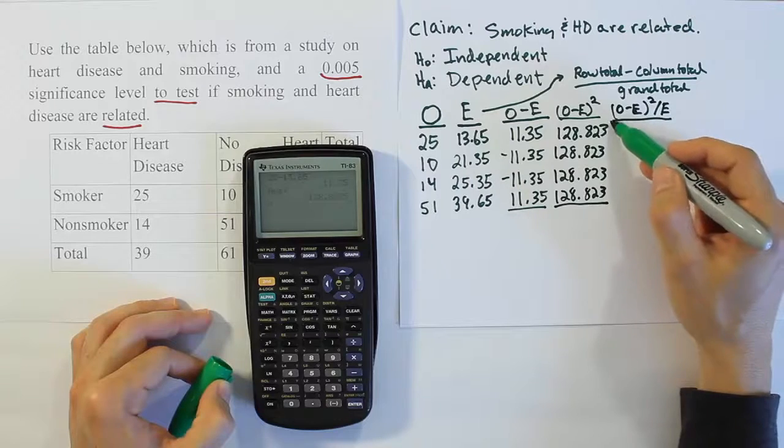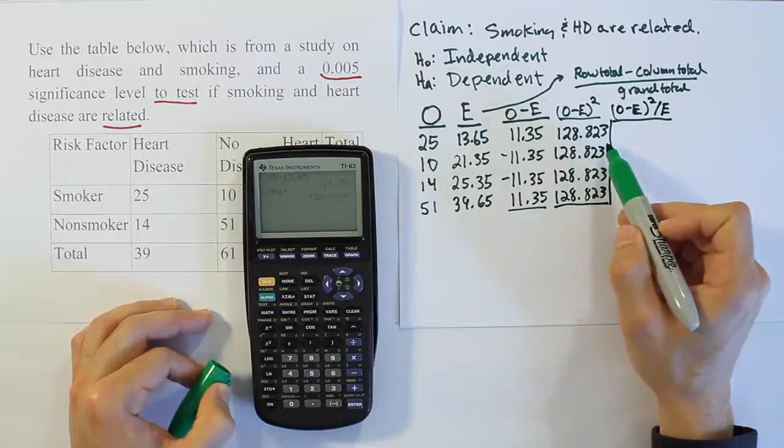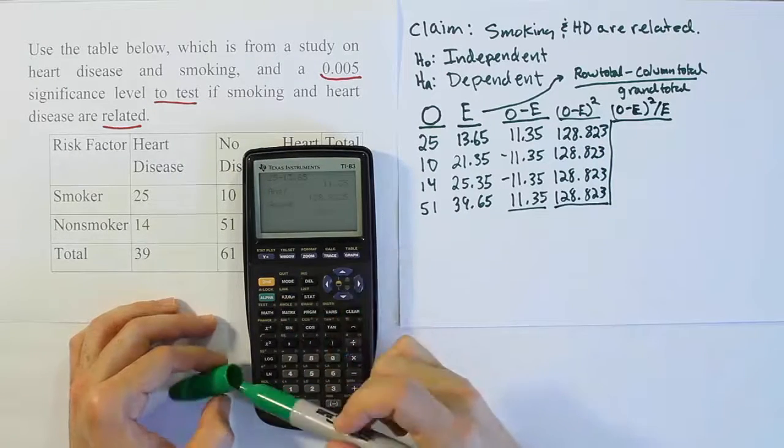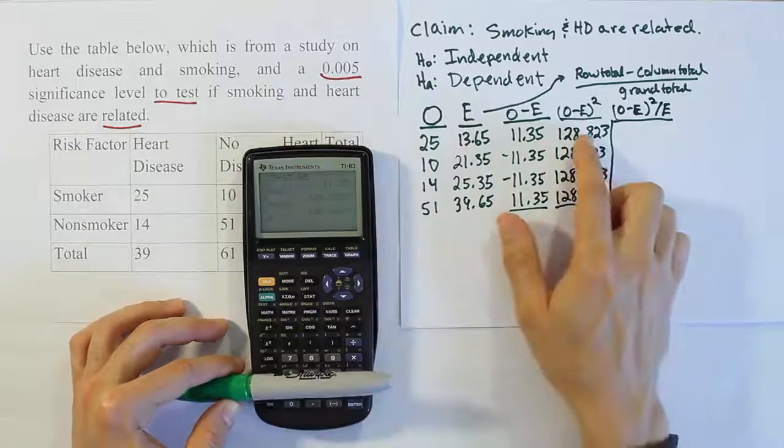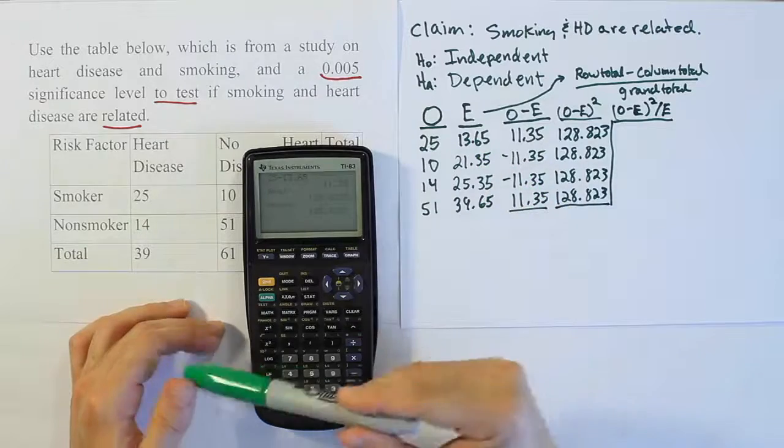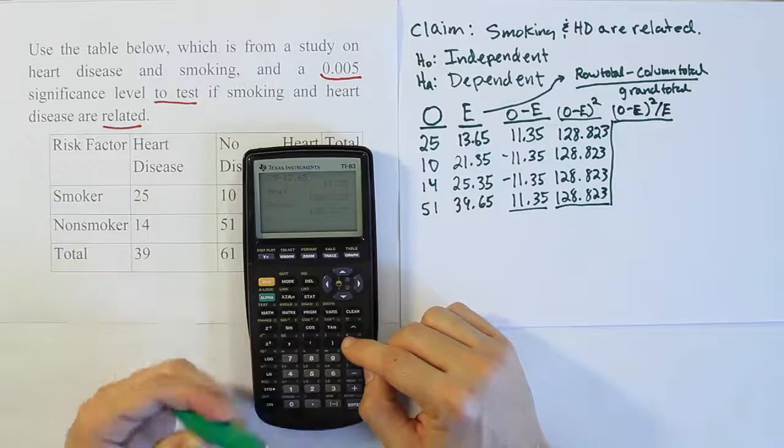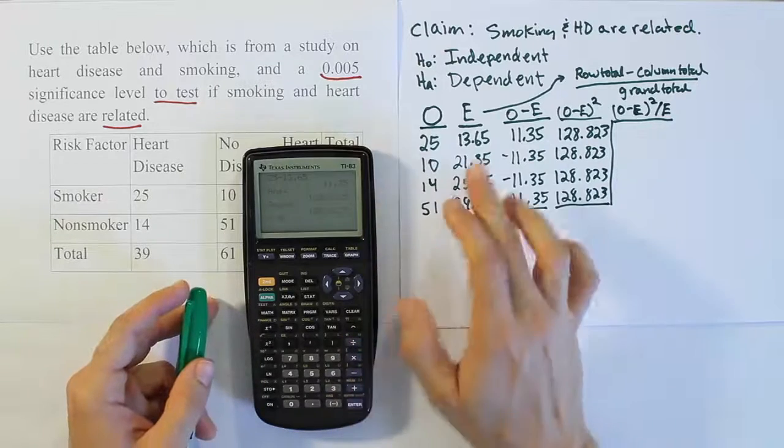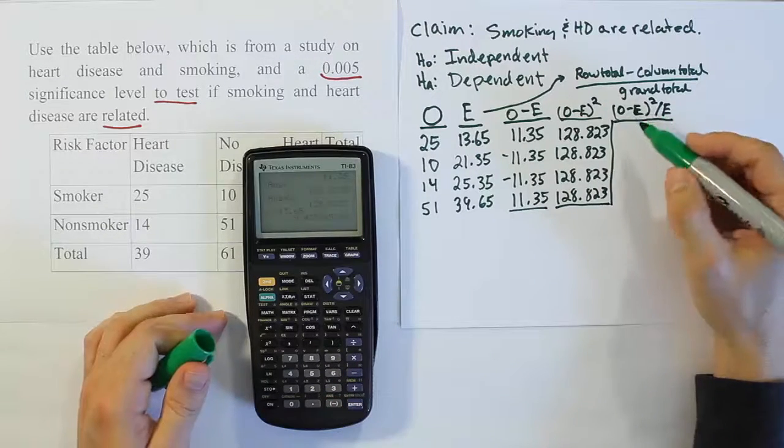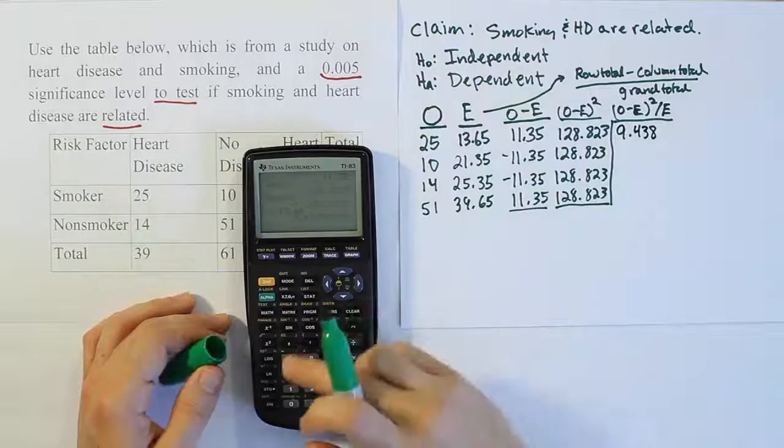Our next step is observed minus expected quantity squared divided by expected. This is our important column because this is the one that will eventually give us our test statistic. I'm taking this 128.823 and storing that as a variable in my calculator because it's being used over and over in this column. Each time, I'm going to divide it by its expectation. So I'll have 128.823 divided by 13.65, and I get 9.438.